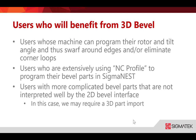The last benefit is for users with more complicated bevel parts not interpreted well by the 2D bevel interface — such as blind bevels or anything requiring swarfing. We may require a 3D part to import. With 3D beveling, we've included the ability to extrude the part into a 3D interface. For more complicated bevels that can't be extruded, we use a 3D part such as SolidWorks or STEP files to bring into the software, saving that information and representation of the part.